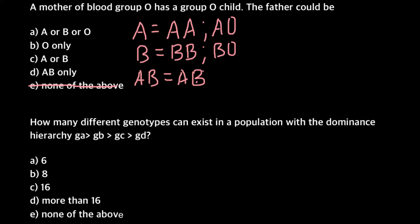We can also say this can be written as BA, but AB and BA are the same. And blood group O phenotype can also be made by only one type of genotype, and that is OO. So now we are ready to solve this problem.